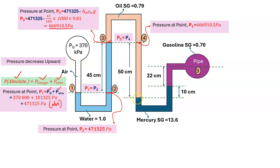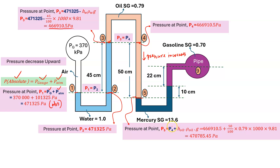From here, we go downward, so pressure will increase. Pressure at point 5 = P4 + h_oil·ρ_oil·g = 466,910.5 + (50/100)×0.79×1000×9.81 = 470,785.45 Pascal.